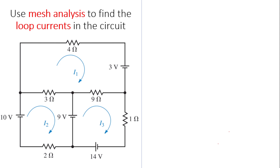We will use mesh analysis to find the loop currents in the circuit. We need to find i1, i2, and i3.